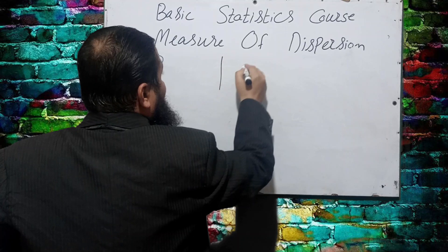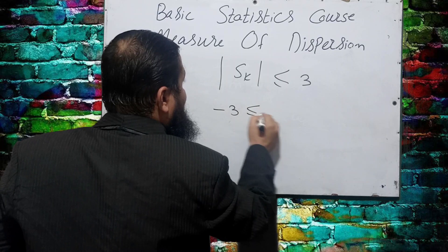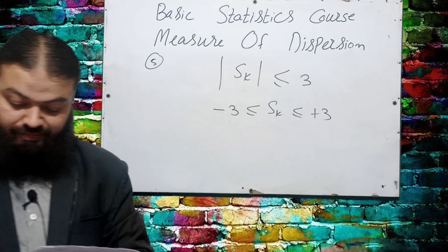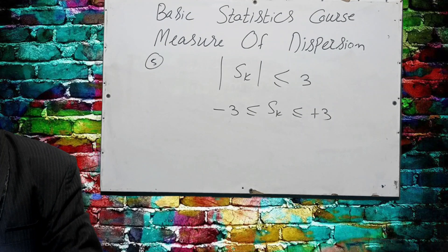Question number five: what are the limits of Karl Pearson's coefficient of skewness SK? The answer is −3 ≤ SK ≤ +3, meaning the coefficient of skewness for Karl Pearson's method will lie between −3 and +3.